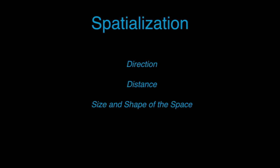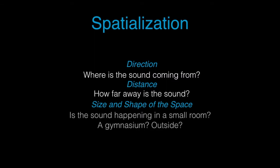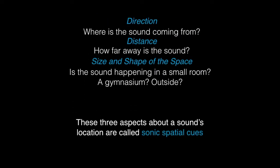We can break down spatialization of sound into three main parts: the direction — which way is it coming from? — the distance — how far away is it? — and then the size and shape of the space that it's occurring in. Is this happening in a gymnasium? Is it happening in your bathroom? Is it happening out in the mountains? These are called sonic spatial cues.